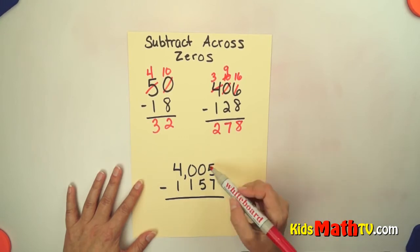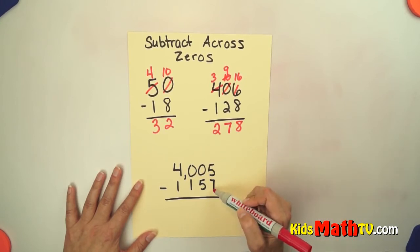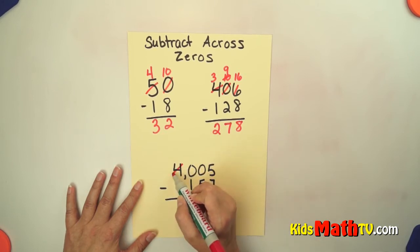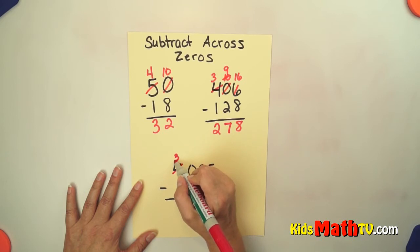In our next one, we have 5 minus 7 here. I can't do that and I don't have anything to borrow here or here. So I'm going to have to go all the way to the thousands to borrow. To regroup.